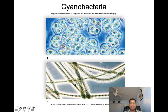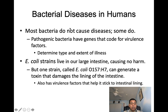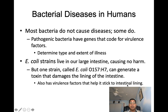Next let's talk about bacterial diseases in humans. Most bacteria do not cause diseases, but some do. Pathogenic bacteria have genes that code for virulence factors which determine the type and extent of illness. E. coli strains are found living in our large intestine and cause no harm. However, one strain called E. coli O157:H7 is very dangerous — it can generate a toxin that damages the lining of the intestine and has virulence factors that help it stick to the intestinal lining.